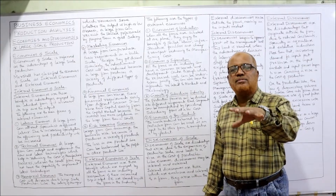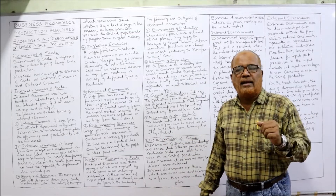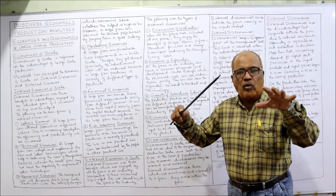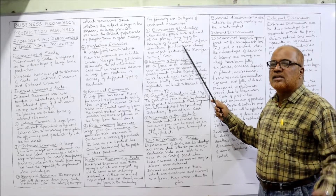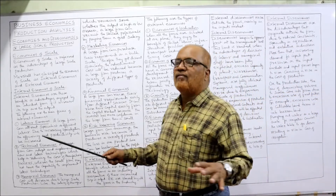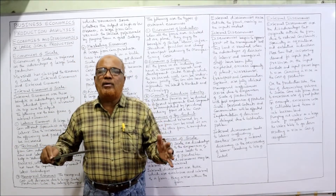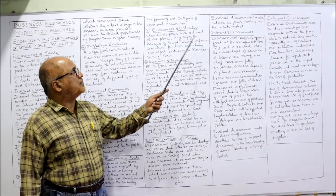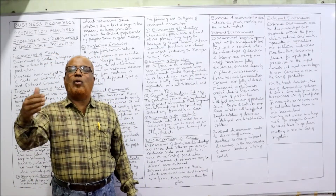The first type of external economy is economies of localization. Localization means all firms are located at one place. When all firms are located together, there is no problem getting labor, transportation, communication, or finance — everything is available at that particular place. Firms enjoy the benefits of skilled labor freely available, infrastructure facilities, and cheap transport, all of which reduce manufacturing cost. When all infrastructure — communication, banking, insurance, warehousing, labor — is freely available, that is localization.